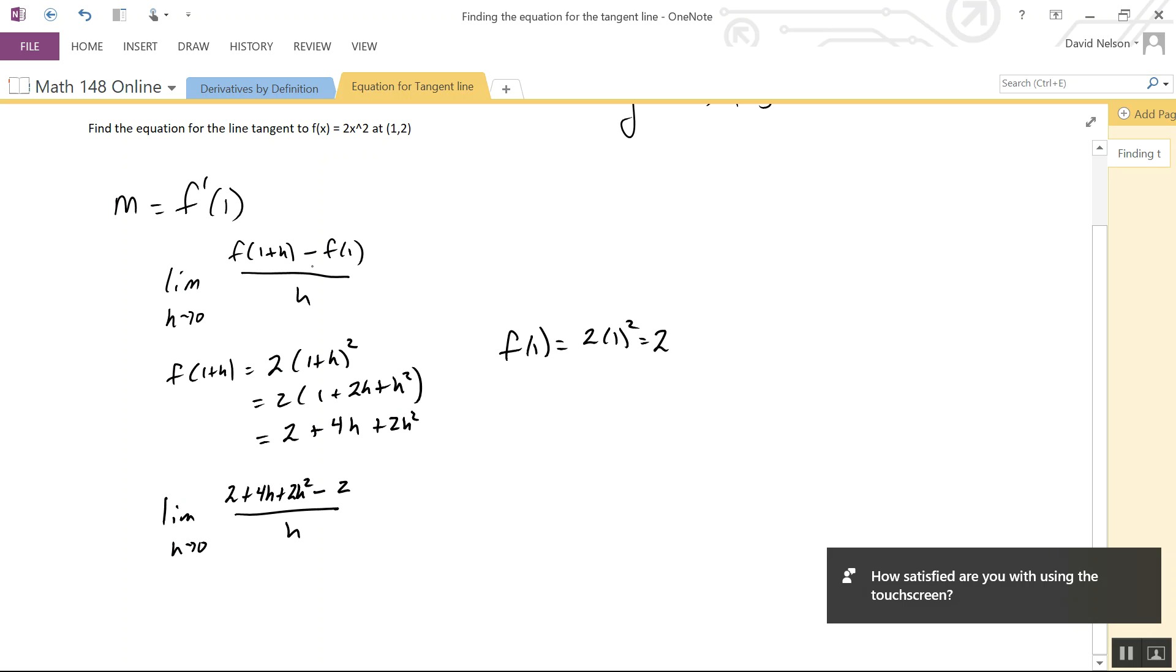Be careful with the negative sign - you have to distribute that through, but I just have a single number, so everything works out. This is f'(1). The 2s will cancel.